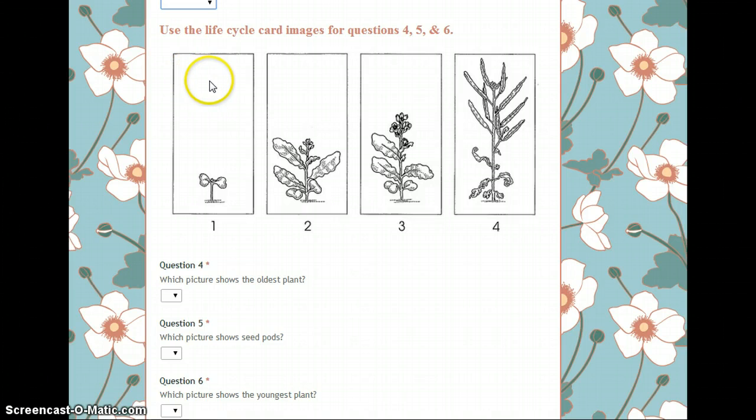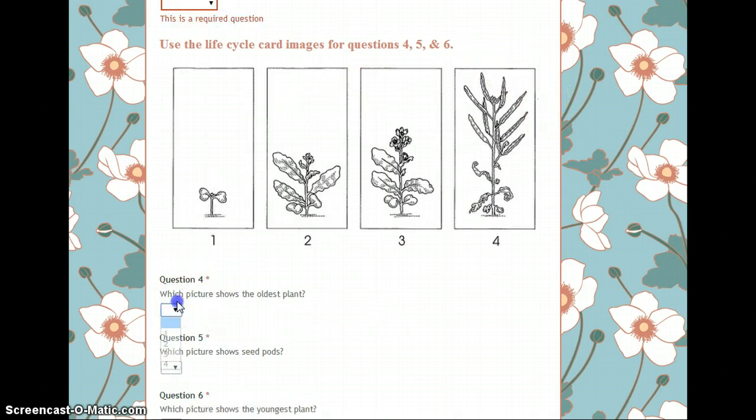Which picture shows the oldest plant? Select your dropdown box and choose image 1, 2, 3, or 4. Again, which picture shows the oldest plant? 1, 2, 3, or 4.